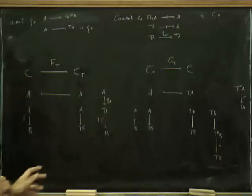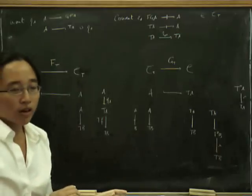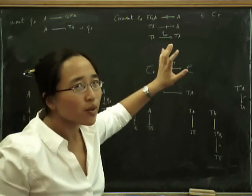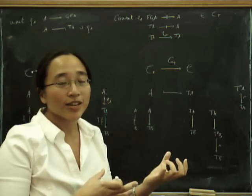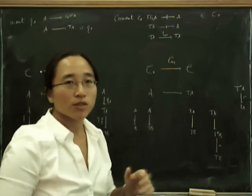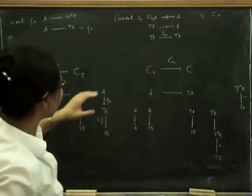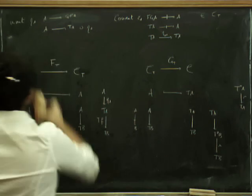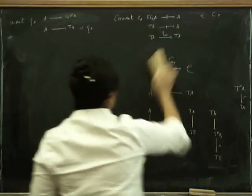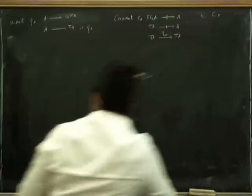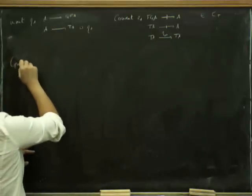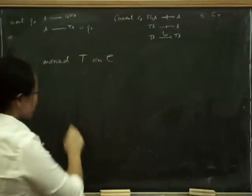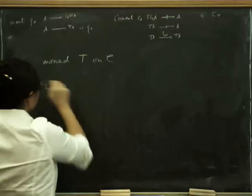You can then check that the unit and counit satisfy the triangle identities. There's an η here and an identity there, but it all comes out right because when you compose morphisms in the Kleisli category you apply μ all over the place, and everything reduces to the monad axioms for η and μ. I won't do this on the blackboard now because I want to say more about how the Kleisli category and the Eilenberg-Moore category interact. Given the monad T on C, there's a whole category of adjunctions giving rise to it.